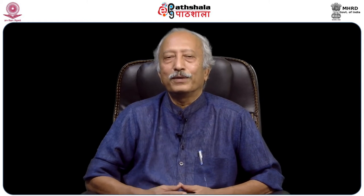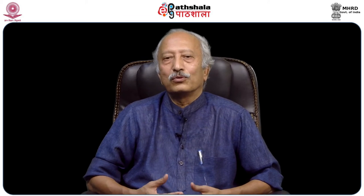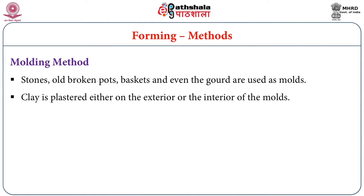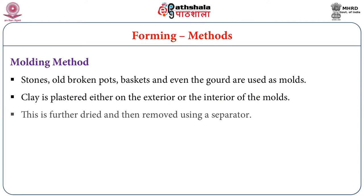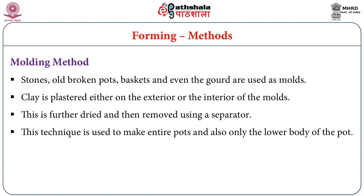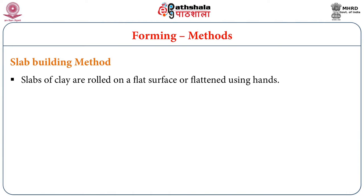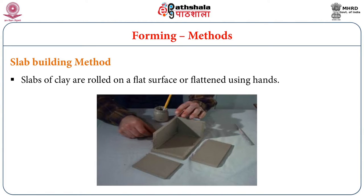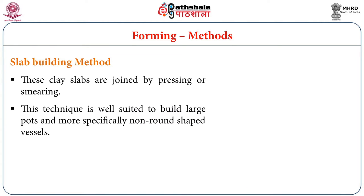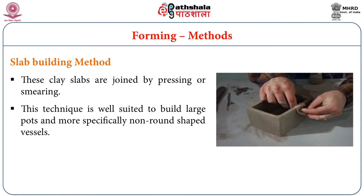Clay is plastered either on the exterior or the interior of molds, further dried, and then removed using a separator. This technique is used to make entire pots and also only the lower body of the pot. In the slab building method, slabs of clay are rolled on a flat surface or flattened using hands, and these clay slabs are joined by pressing or smearing. This technique is well suited to build large pots and more specifically non-round shaped vessels.